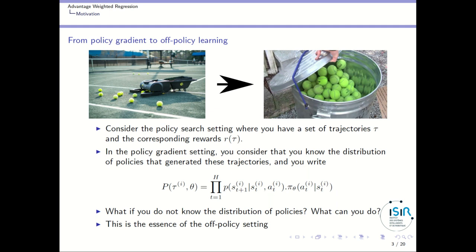In the policy search context, in general, you consider that your agent will collect a set of trajectories — called tau — and the corresponding rewards R of tau, which is the return of a particular trajectory. In the standard policy gradient setting, something very important is that you consider that you know the distribution of policies that generated these trajectories. You then write the probability of a trajectory given the policy parameters as the product of the transition function of your MDP times the policy. Intuitively, the probability of the trajectory is the probability of being in the first state and then performing the first action in that state, which is given by your policy.